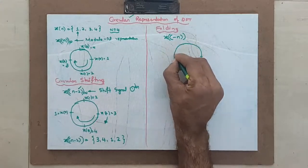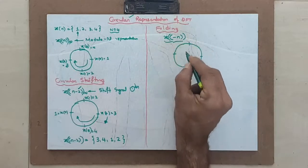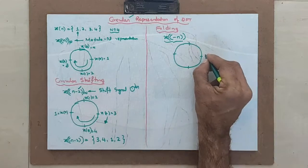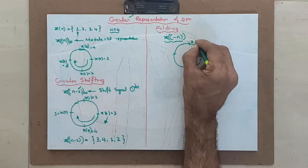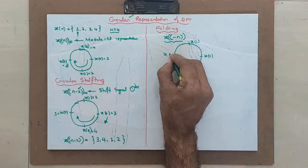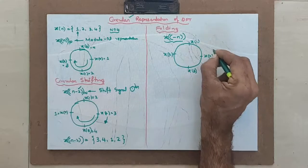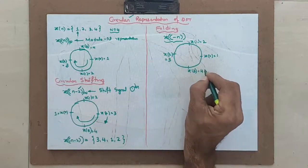See now? 1, 2, 3, 4. Now, what happened? You are folding the signal or you are representing x of minus n. How to do that? Write in the anti-clockwise direction. x0, x1, x2, x3 or this is nothing but 1, 2, 3 and 4.